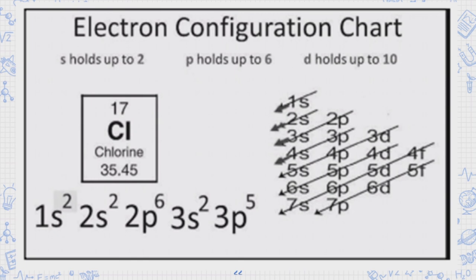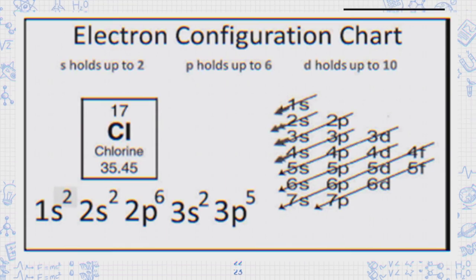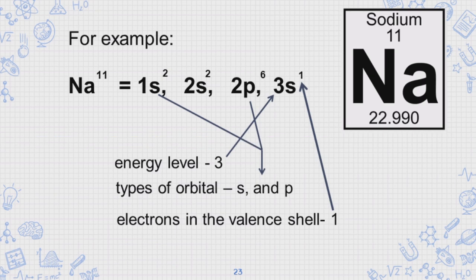Where the highest energy level is 3, and the valence electron configuration are 3s2, 3p5.